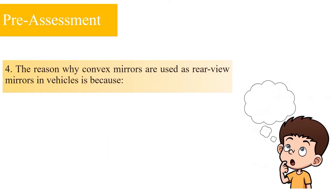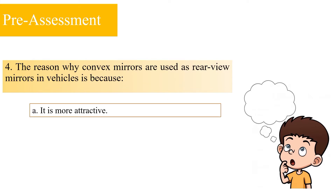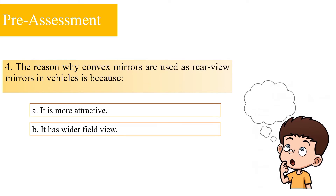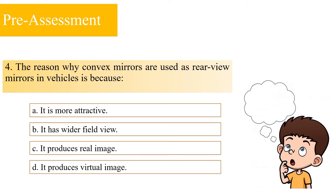Number 4: The reason why convex mirrors are used as rear-view mirrors in vehicles is because: A: it is more attractive; B: it has a wider field of view; C: it produces a real image; or D: it produces a virtual image. The correct answer is letter B — it has a wider field of view.